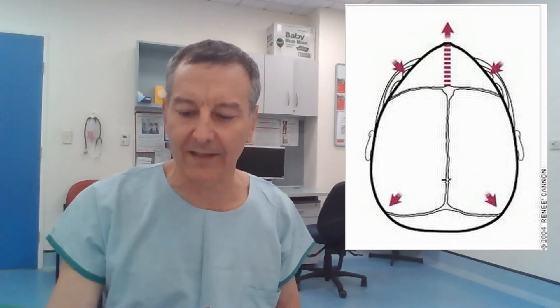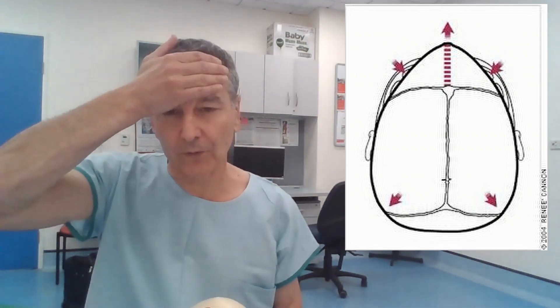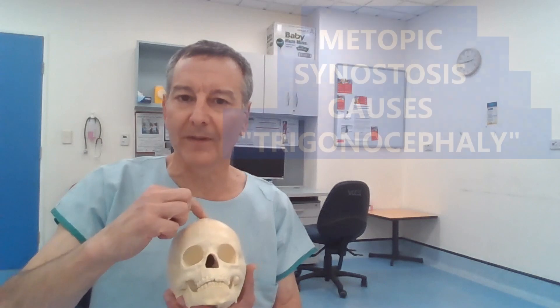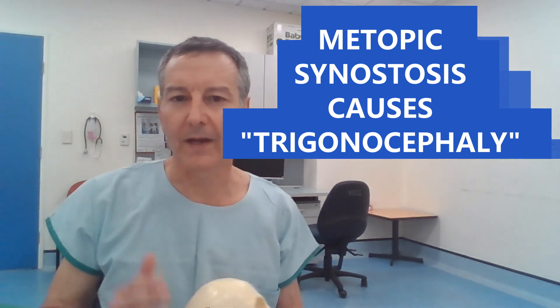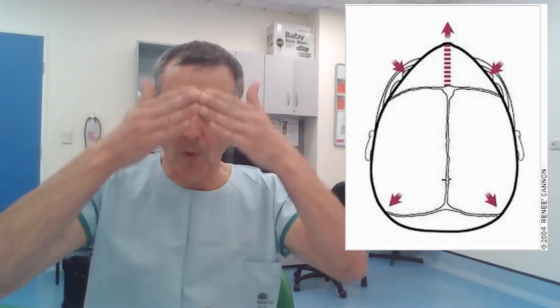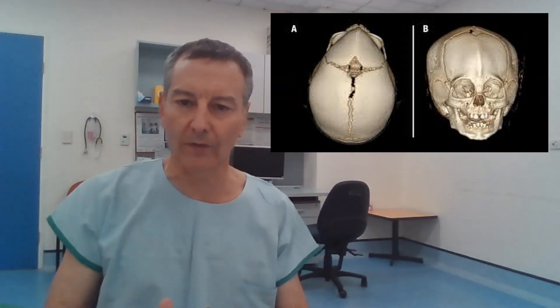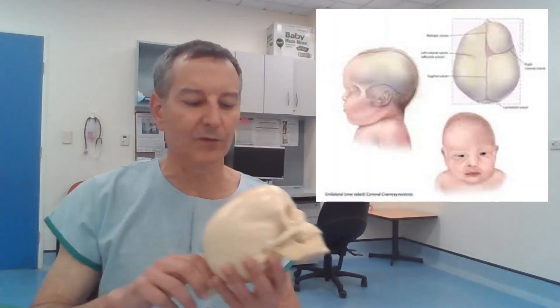The next most common type of craniosynostosis we see in our clinic is an abnormal fusion at the very front of the forehead. Your frontal bone actually starts out as two bones with a suture between them called the metopic suture, which is normally fused by about nine months of age. In some babies it fuses even earlier, and as a result the children are born with a triangular-shaped forehead, which is called trigonocephaly. In addition to the triangular forehead, the eyes tend to be a little closer together, and the shape of the eyes is also affected, which can be seen on X-ray or CT scan.